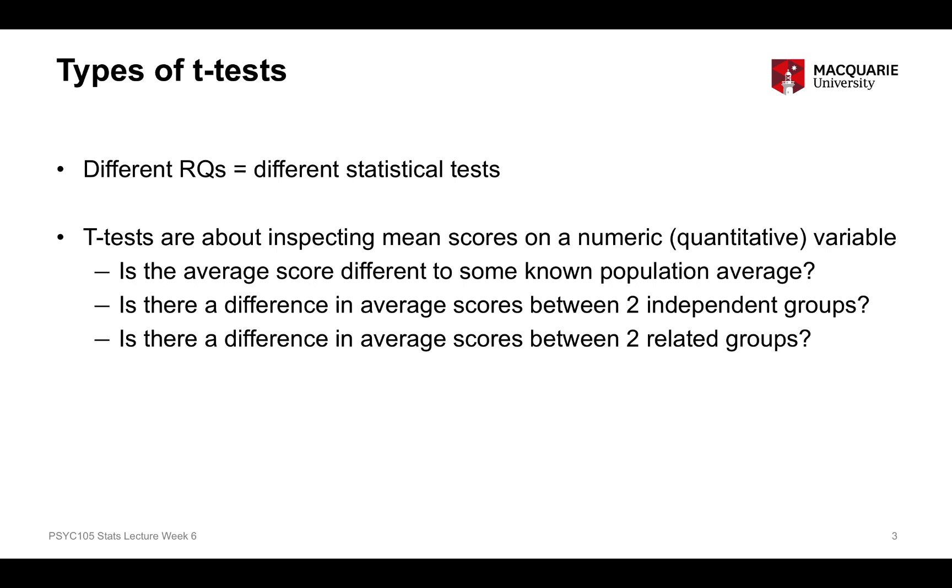The third kind of t-test, which we'll be talking about next week, is looking to see if there's a difference in the average score, the mean score, between two related groups. Those related groups could be the same people measured on two different occasions, or it could be non-independent people, related people like husbands and wives, twins, or matched groups.